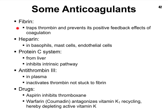Fibrin itself can be considered an anticoagulant. Heparin, which is produced by basophils and even other cells called mast cells, including endothelial cells, acts as a blood thinner. The liver produces something called protein C, which you'll often see appear on patients' blood reports — it can inhibit the intrinsic pathway from occurring. Antithrombin 3, which floats around in the plasma, can inactivate thrombin. And drugs such as aspirin and coumadin, a form of warfarin, are good anticoagulants.